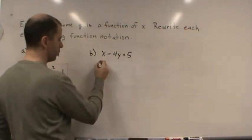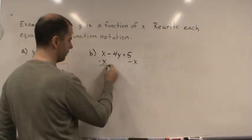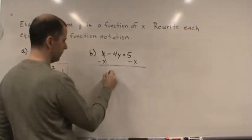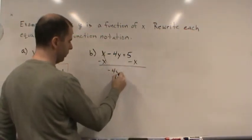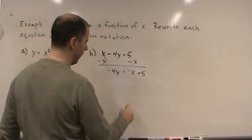So we're going to subtract x from both sides. And so we get negative 4y equals negative x plus 5.